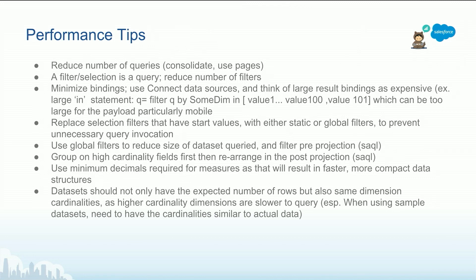The selection filters with start values — we talked about this. If you are doing some heavy SAQL cycle, it's always recommended to group on the high cardinality fields first. Then you can rearrange and reorder in the post projection. This is specific to SAQL cycle. Use minimal decimals — when you were creating derived fields in the compute expression, there was a section for the scale. Use the minimal decimals if you don't need them, and this is important with large volumes of data at the dataset level.